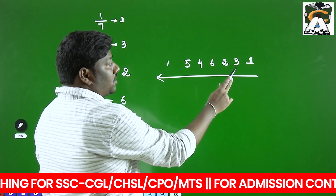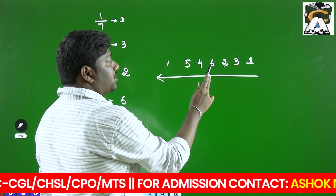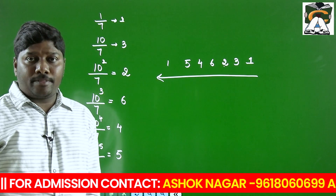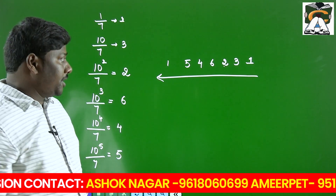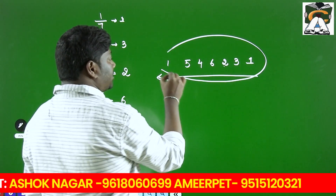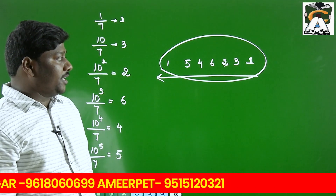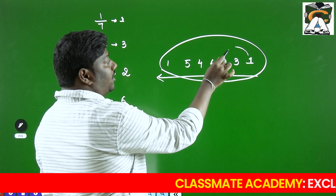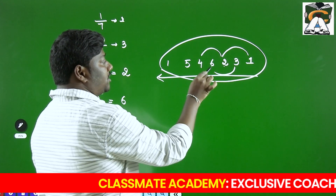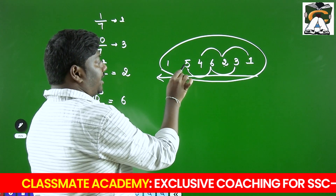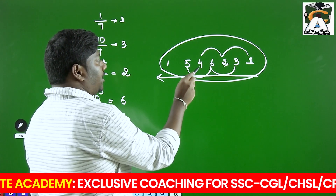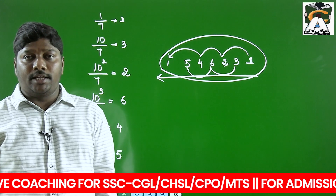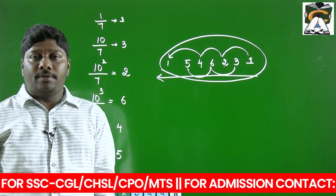Remember these digits respectively from right to left: 1, 3, 2, 6, 4, 5 — for units, tens, hundreds, thousands, ten-thousands, and lakhs place. You can remember this pattern by doubling each time: 1 double is 2, 2 double is 4, 4 double is 8 but mod 7 gives 1, and so on. Just remember that every multiplication by 3 mod 7 keeps all remainders less than 7.